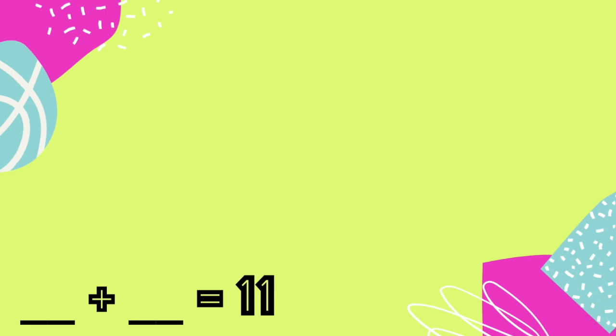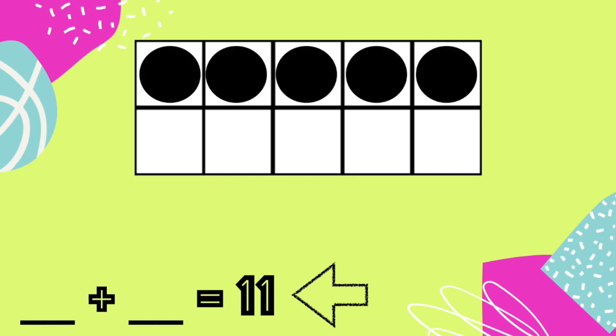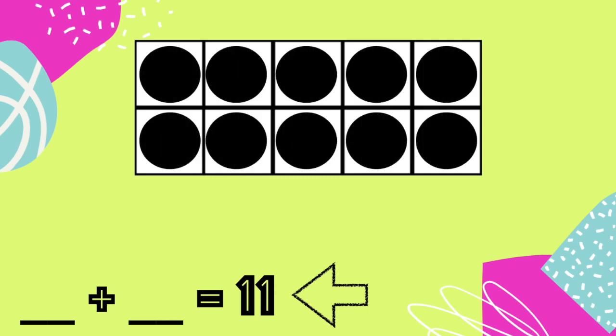Let's start by making the number 11. Since we're going to be making our numbers using 10 today, I'm going to use a 10 frame as a tool to help me. The number 11 is greater than 10. That means I'm going to need more than this 10 frame. So I can start by filling the 10 frame all the way up with 10 counters.